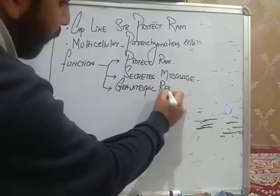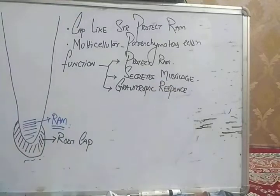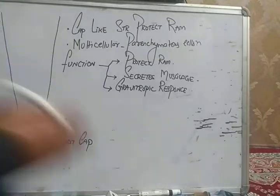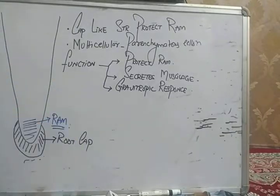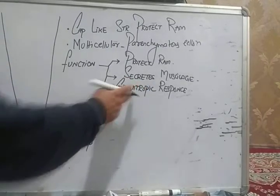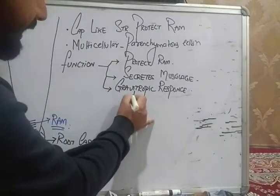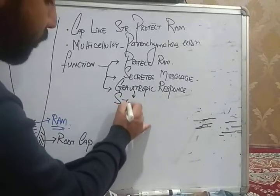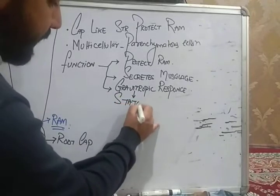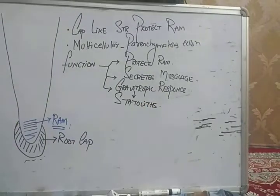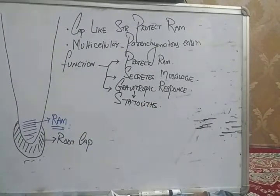Ek aur baat root cap ke related - gravitropic response. Last lecture mein maine aapko kaha root jo hai it is positively geotropic, meaning it deeply penetrates into the soil. This gravitropic response is actually perceived by the root cap. The reason is that inside the root cap there are some important cells called statoliths.